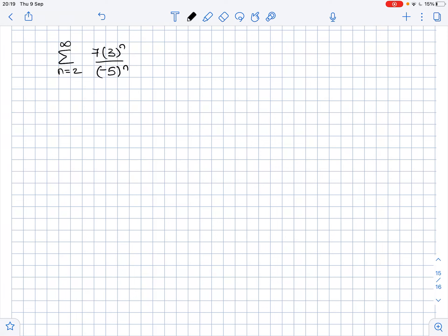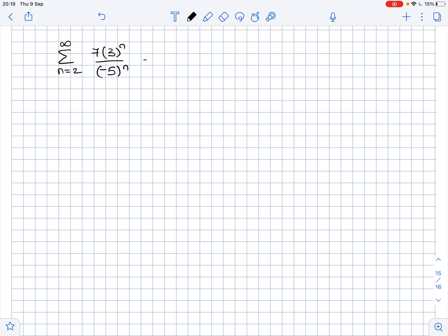For the given geometric series, we need to find the common ratio, determine if the series converges or diverges, and if it converges, find its sum. To find the common ratio, let's look at the first few terms of this series.